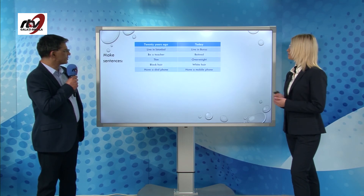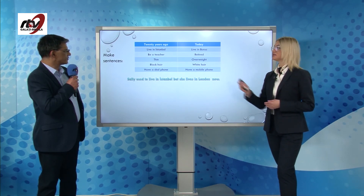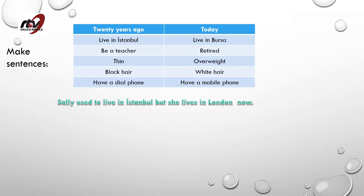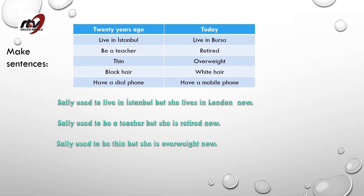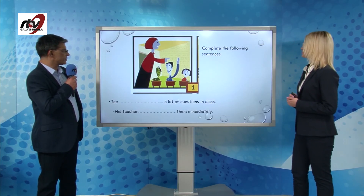Let's move on to our next activity. We have to make sentences using words from the first column describing activities from 20 years ago and words from the second column describing what we do nowadays. She used to live in Istanbul, but she lives in London now. Sally used to be a teacher, but she is retired now. Sally used to be thin, but she is overweight now. Sally used to have black hair, but she has white hair now. Sally used to have a dial phone, but she has a mobile phone now. Times change!